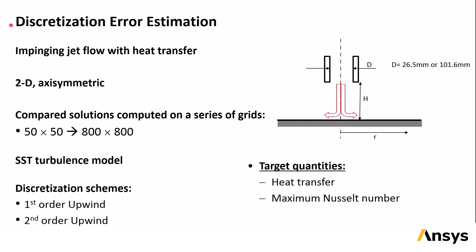This example uses a simulation of an impinging jet flow with heat transfer. Flow is directed from the jet opening to the plate, where it turns and goes radially outward along the plate. The simulation is a 2D axisymmetric simulation, and it's performed on a sequence of increasingly fine grids going from 50 by 50 cells to 800 by 800 cells. The SST turbulence model was used, and calculations were made using both first-order and second-order upwind discretization. The target quantity we'll use to judge the discretization error is the maximum Nusselt number on the surface of the plate.